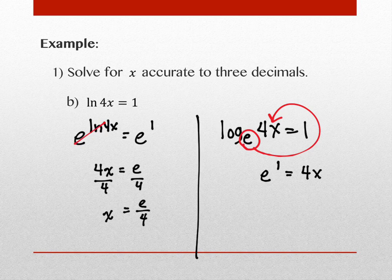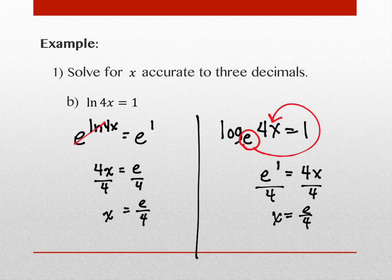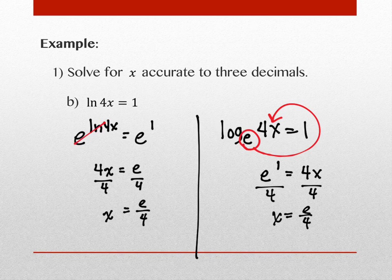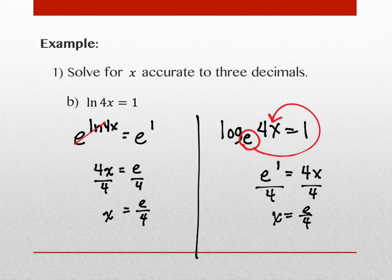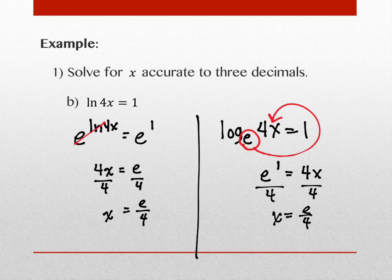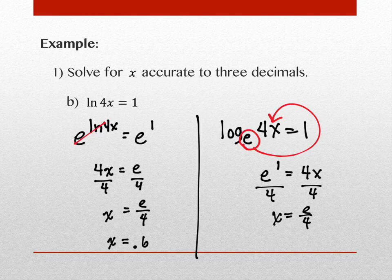Either approach gives x = e/4. Grab your calculator for the decimal approximation. There are two places to find e on your calculator: 2nd + ln gives e with a caret, or 2nd + division gives just e. Either way, e/4 ≈ 0.680.